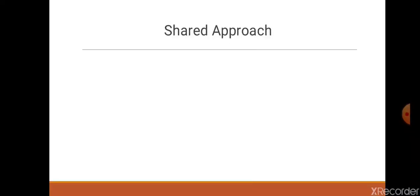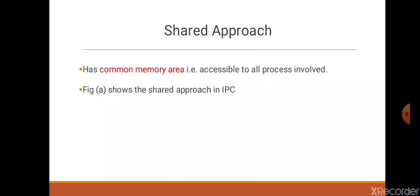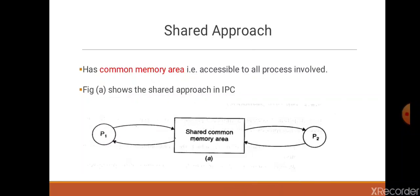In shared approach, the information which is to be shared is placed in a common memory area which is accessible to all processes involved in an IPC. The figure shows the shared approach in IPC. Here we can see the two processes, P1 and P2, and there is a shared common memory area through which both processes are communicating with each other.